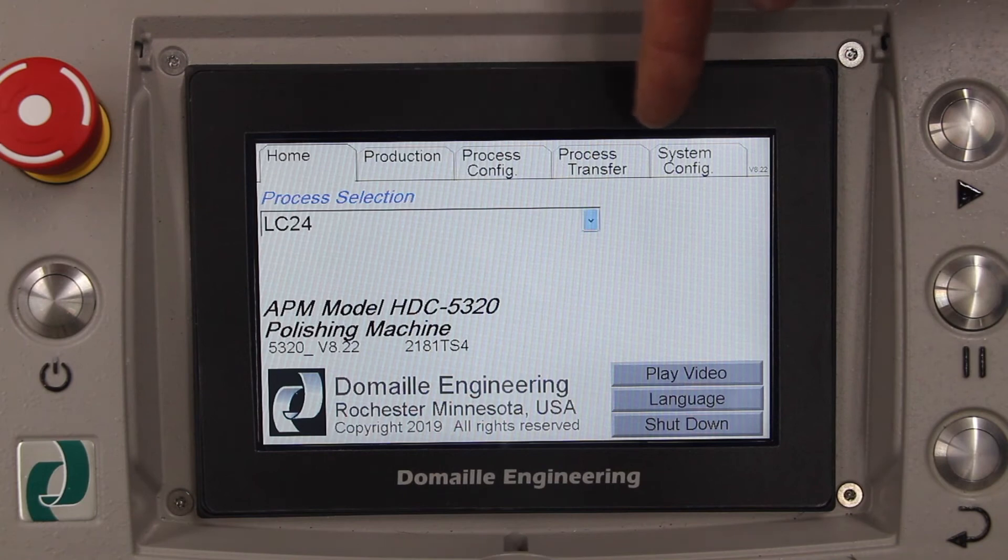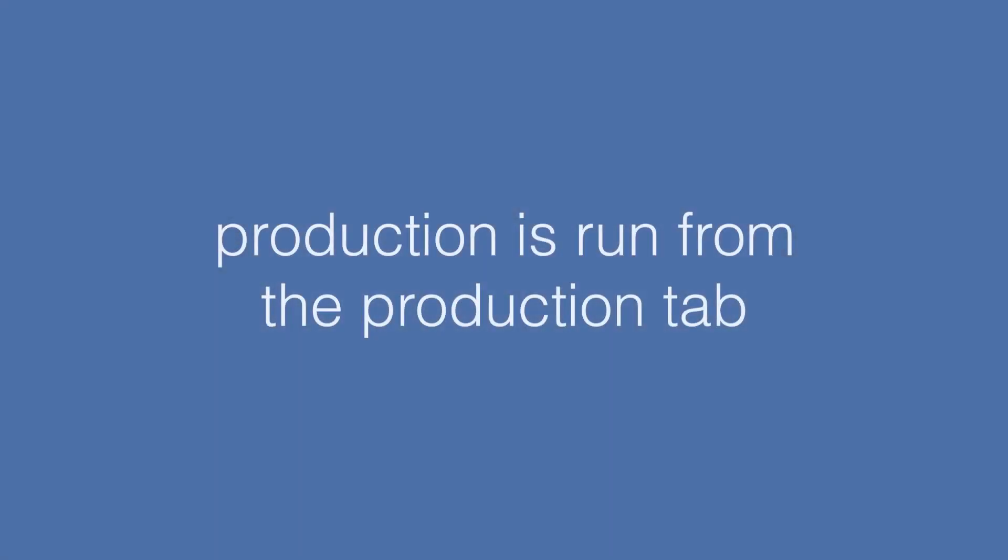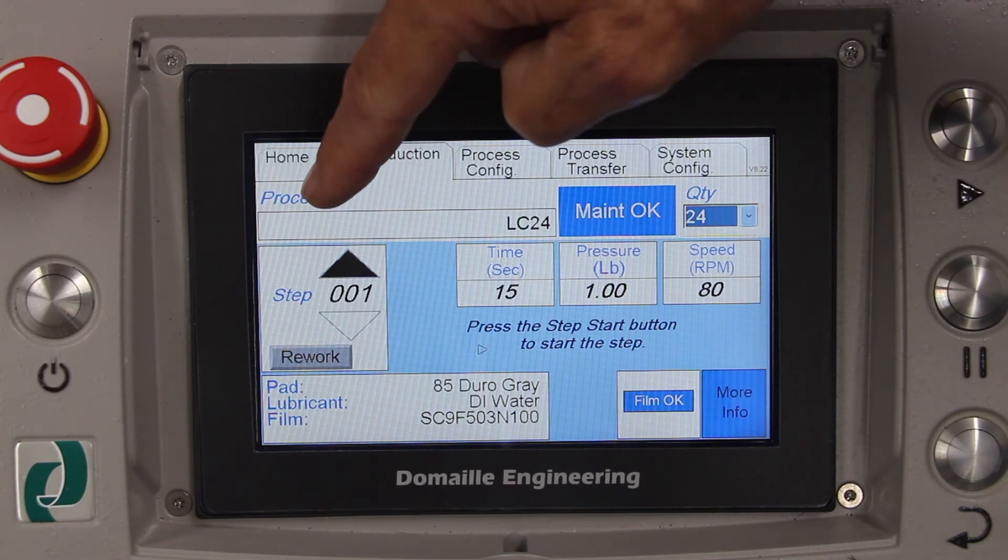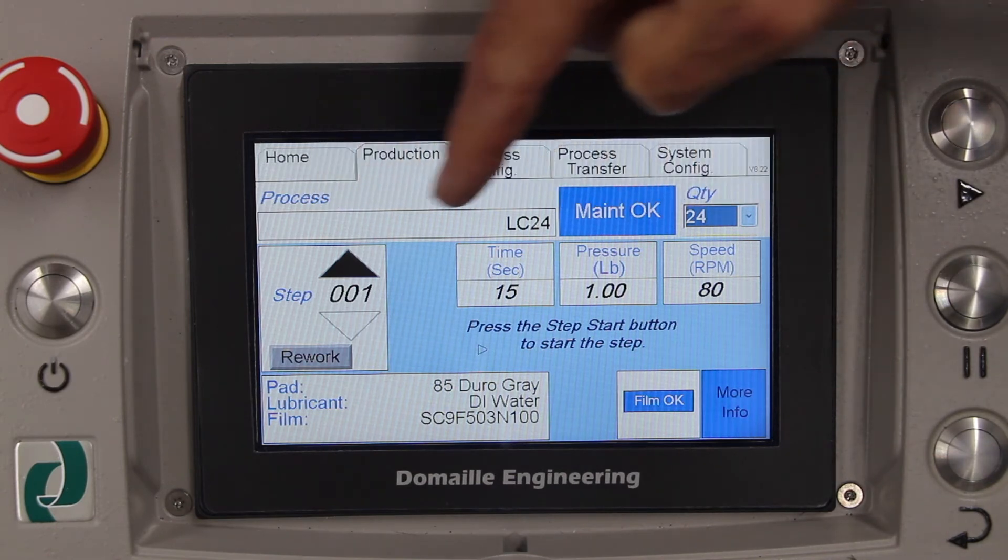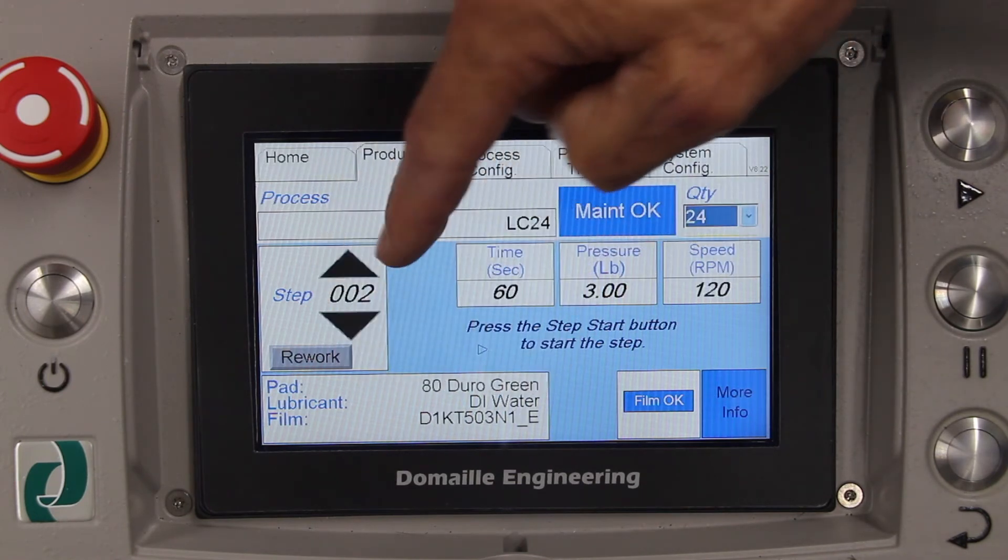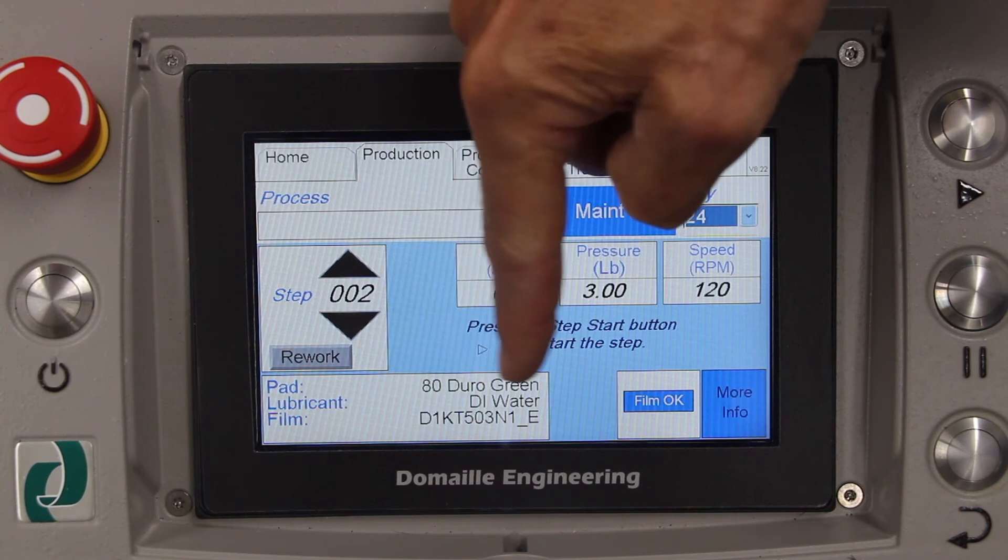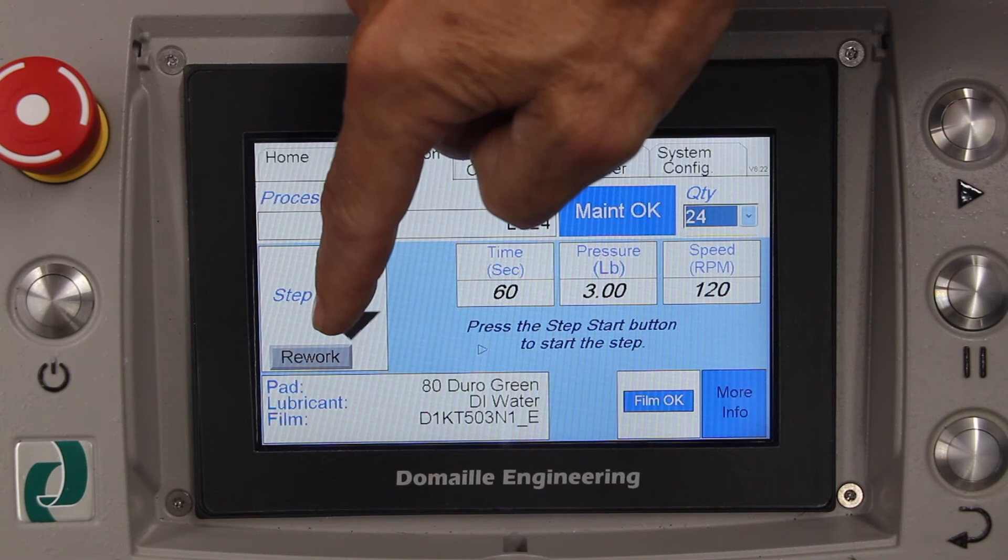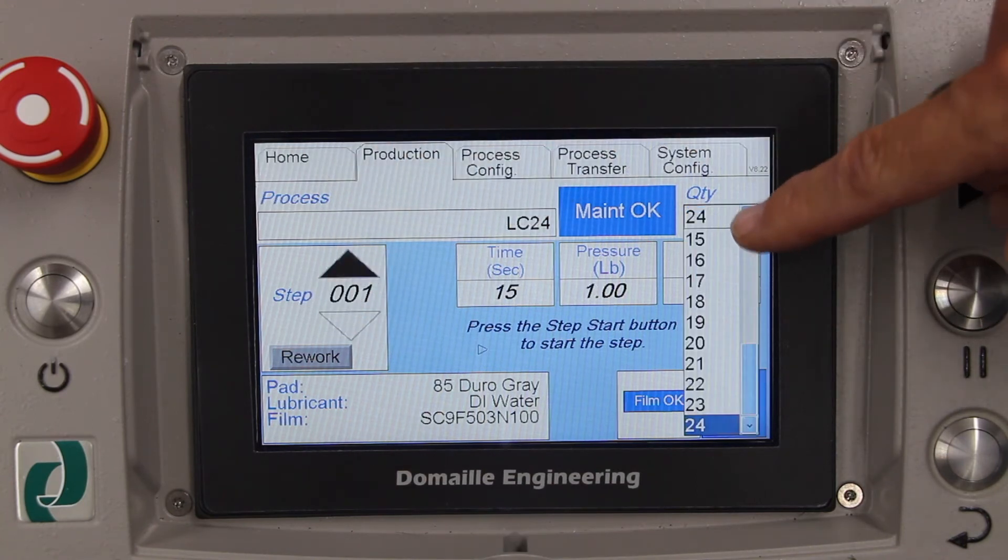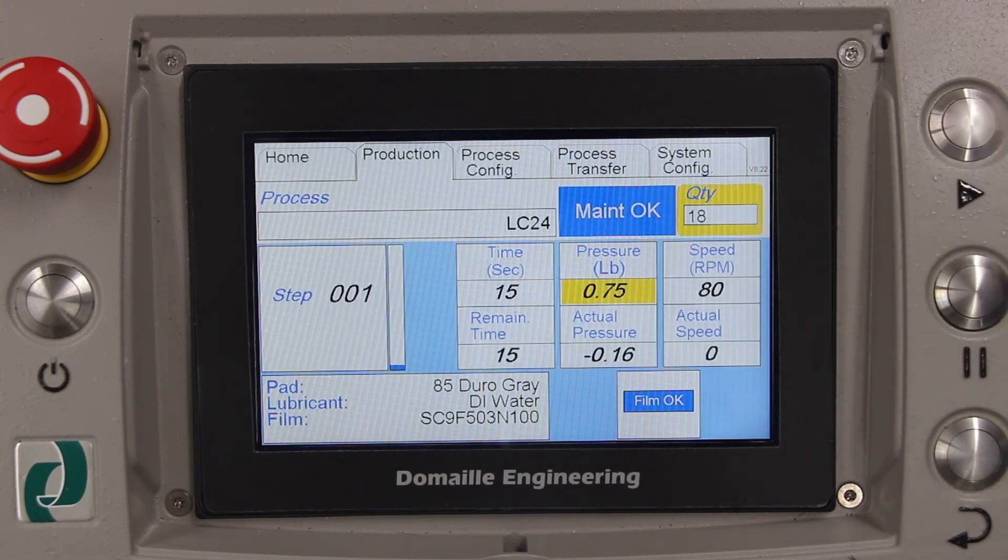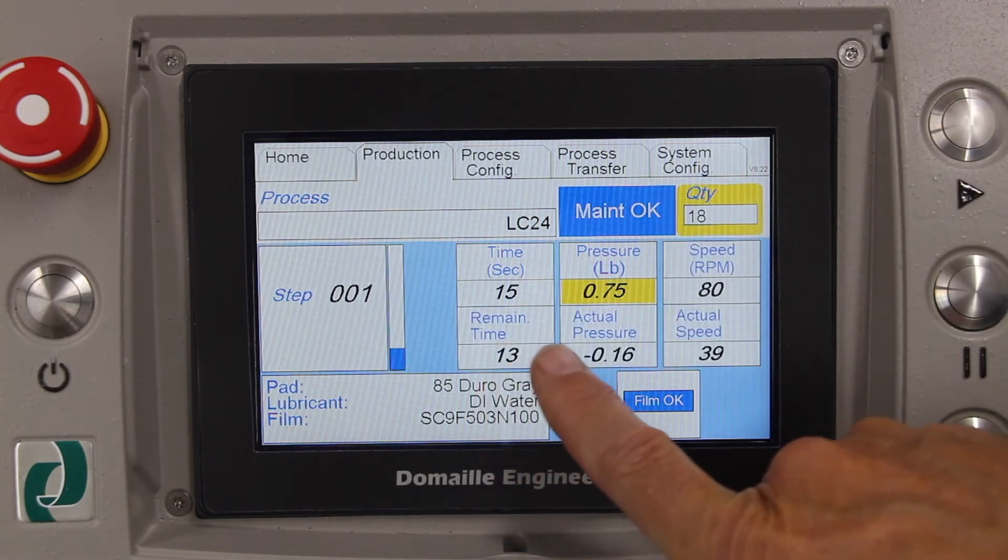The user interface has five different tabs. After choosing the stored process from the Home tab, the Production tab covers the number of connectors being polished, and will display the parameters such as time, pressure, and speed for each step guiding you through the process. When a fixture is partially loaded, the machine automatically compensates the fixture pressure, highlighted in yellow on the display. During operation, both set and actual values are displayed.